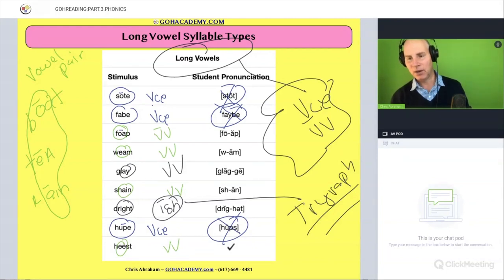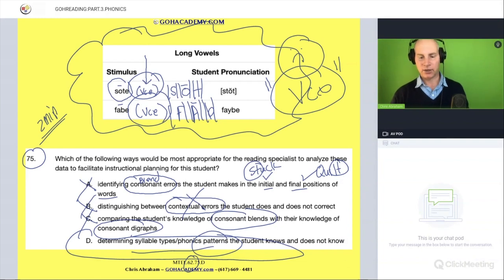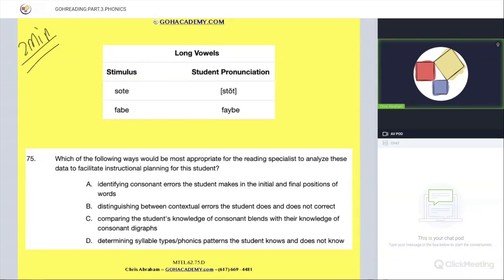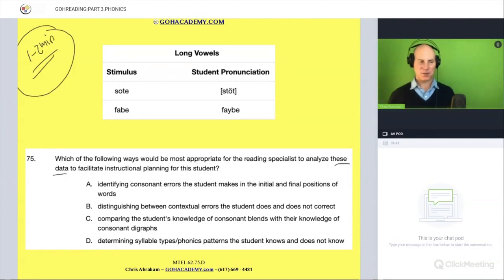Now let's read the question that goes with it. You did most of the heavy lifting just now, but let's just read the question. I'll clear off my chicken scratchings, and you can have two minutes. Tell me when you read it, pause me now. Let's read it together. Which of the following ways would be most appropriate for the reading specialist to analyze these data to facilitate instructional planning for this student? You know, when I read this, I had to read it a couple of times because it felt clunky to analyze these data. These data to facilitate instructional planning for this student feels clunky, but that's just me.